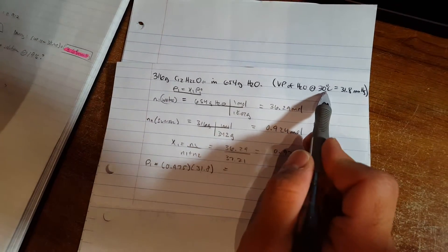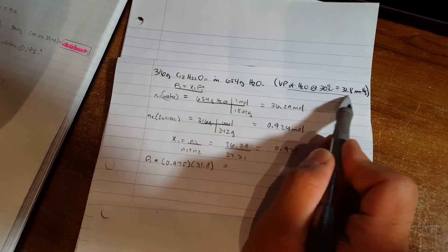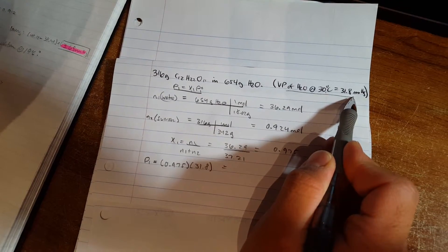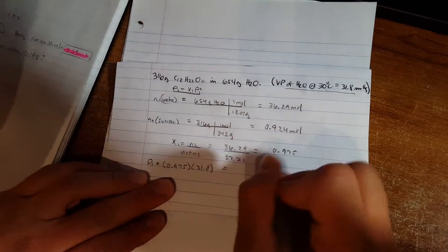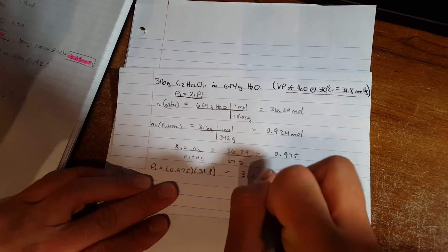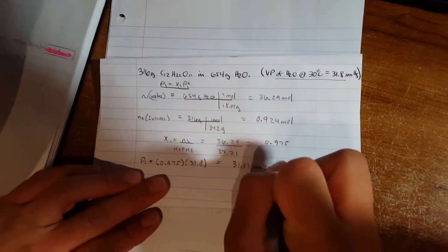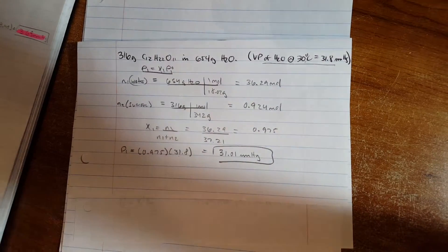31.8 is given to us here as a vapor pressure of water at 30 degrees Celsius. This comes out to 31.01.